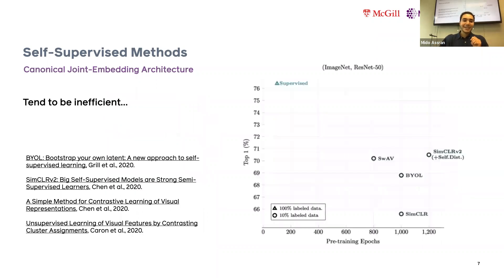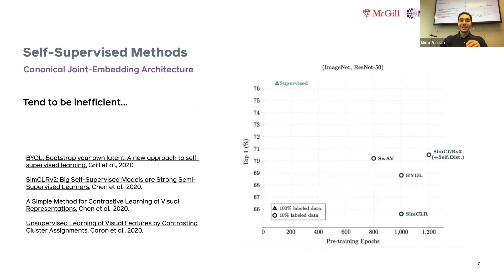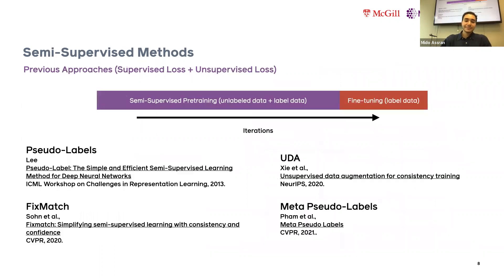The problem with these approaches is they tend to be inefficient. Pre-training a ResNet-50 on ImageNet in a fully unsupervised fashion and then fine-tuning on just 10% of ImageNet labels, there's still a large gap compared to fully supervised training — both in accuracy and in pre-training epochs. These methods need much more compute because they don't use any semantic signal during pre-training.